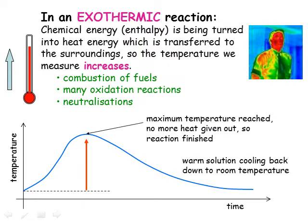The graph here shows how the temperature increases during an exothermic reaction. The temperature increases as the reaction progresses until one of the reactants is used up. Then the reaction finishes and the temperature is at its maximum. After that, with no more heat being produced, the reaction mixture slowly cools back down to the temperature of the surroundings.